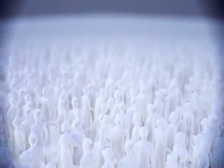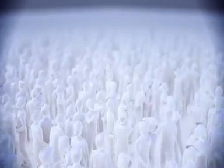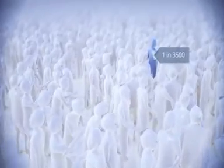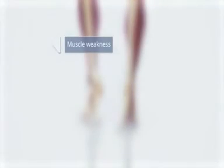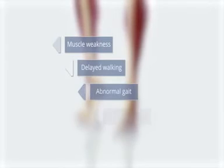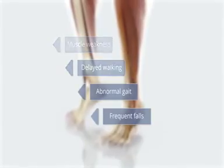Duchenne muscular dystrophy, or DMD, is a progressive and disabling genetic neuromuscular disease which affects approximately one in every 3,500 to 5,000 newborn boys. DMD is a universally fatal disease which is characterised by muscle weakness, leading to delayed walking, abnormal gait and frequent falls, among other developmental delays in the first few years of life.